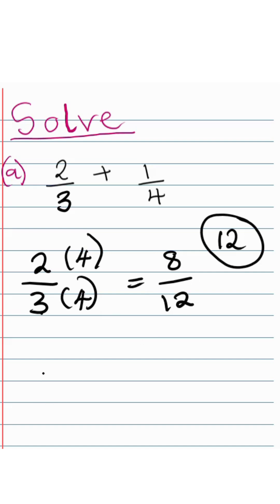And then we do it for the other side, which is 1 quarter, 1 over 4. We want to make sure that this denominator becomes 12. And how does it become 12 is by multiplying it by 3. We multiply both the denominator and the numerator, and then we get 3 over 12.